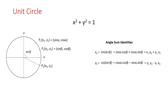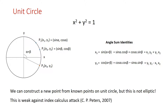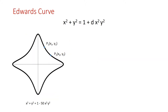However, this is not elliptic, and this causes it to be weak against some cryptographic attacks. The Edwards curve is an elliptic alternative of the unit circle, and its equation is very similar to the unit circle — we just add the term d times x squared times y squared, where d is a constant value. For example, d equals minus 50. P1 and P2 are points on the Edwards curve, and we can construct a new point P3 on this Edwards curve from known points P1 and P2.